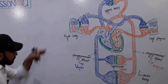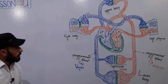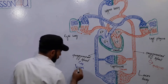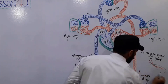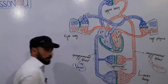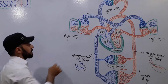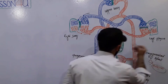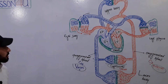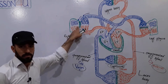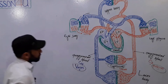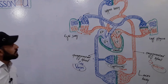So friends, this is our circulatory system. The most important organs in the circulatory system are: veins, arteries, capillaries, and most importantly the heart. The lungs are also part of this system because here the oxygenation of the blood occurs — carbon dioxide is removed and oxygen is provided to the blood.